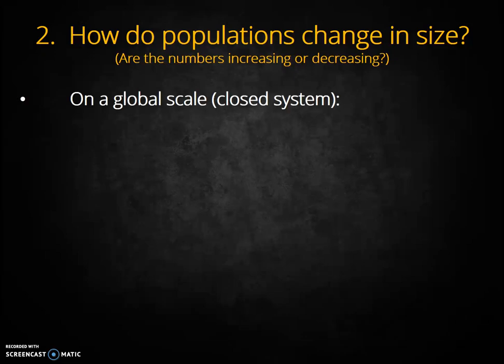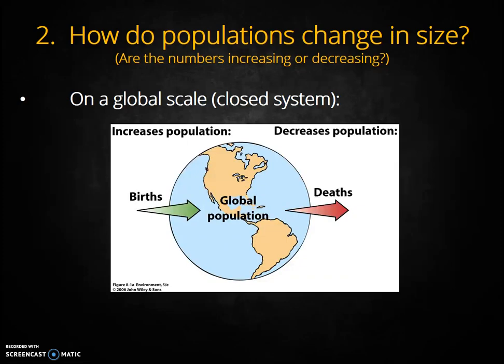In a closed system, there is no opportunity for immigration or emigration. This model applies to the total human population on Earth, and also to any population where immigration and emigration is not an option — for instance, if the population is isolated on the top of a mountain or in some other isolated location. In these cases, the growth rate depends only upon the birth rate and the death rate.